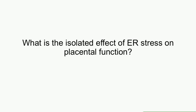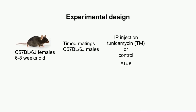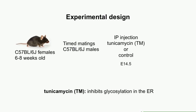We wanted to know the isolated effect of ER stress on placenta function, so we turned to the mouse model. Our experimental design is simple: we take C57 black 6 females, perform timed matings with black 6 males, and at E14.5 we inject pregnant females with tunicamycin or a control injection. Tunicamycin is a commonly used drug that inhibits glycosylation in the ER, resulting in massive protein misfolding and a very strong ER stress response.